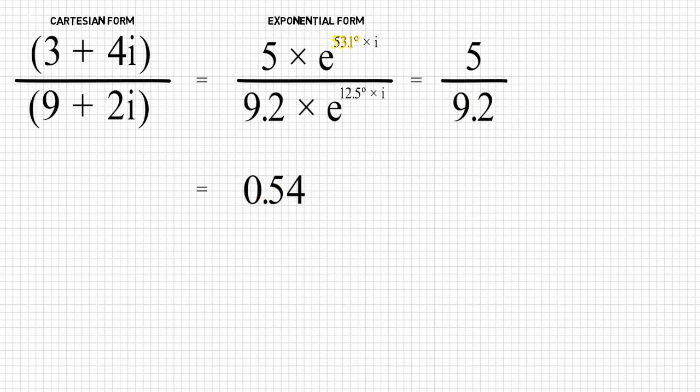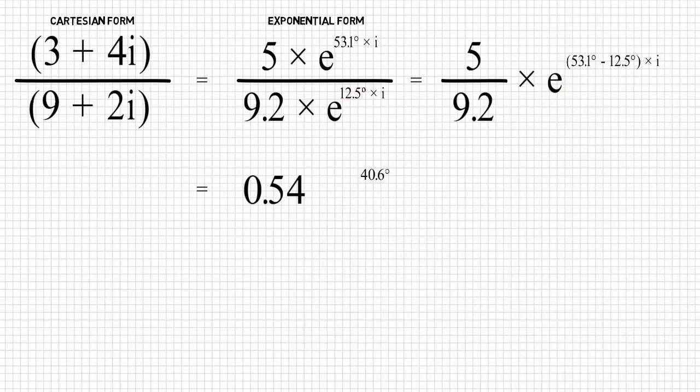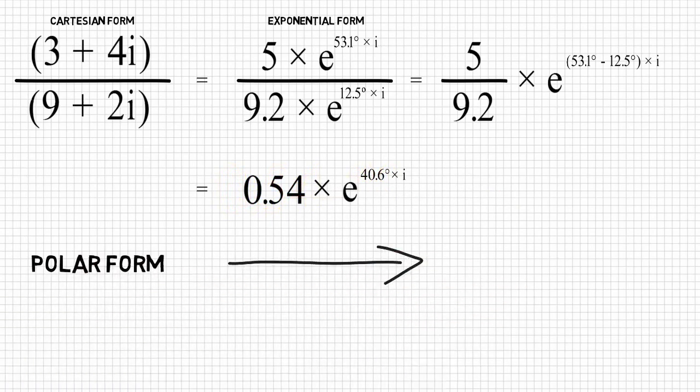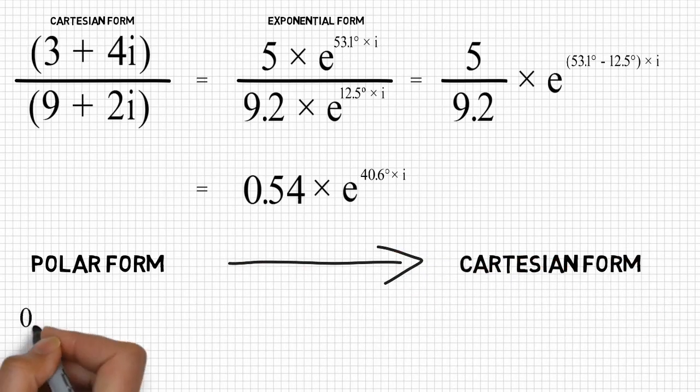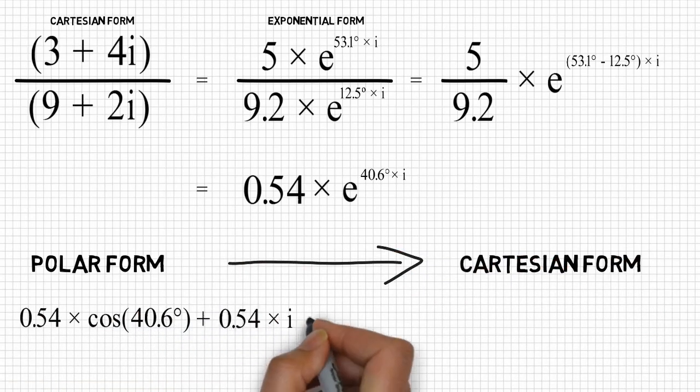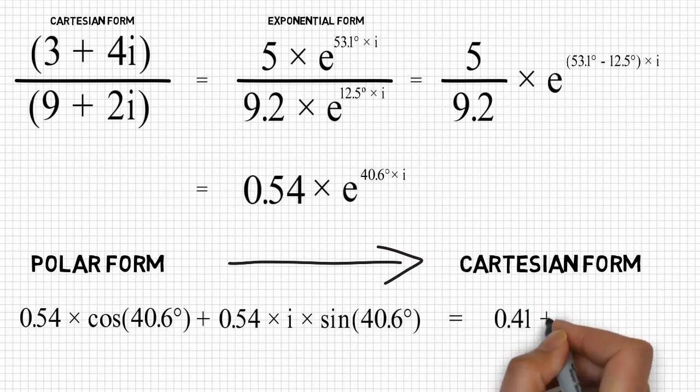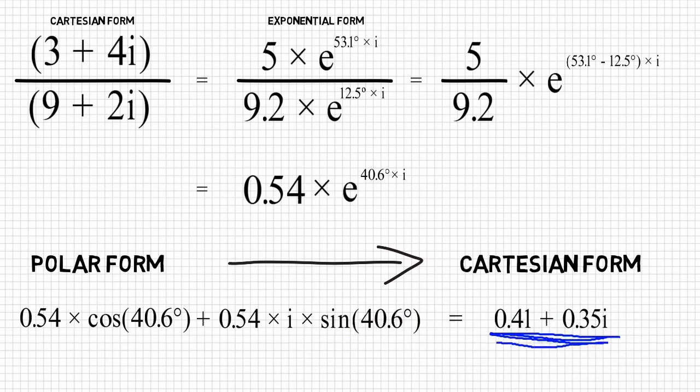When multiplying, we added the 53.1 degrees and the 12.5 degrees. Now that we are dividing, we simply minus them instead, giving us 40.6 degrees. This gives us the overall result, 0.54 times e to the 40.6 degrees times i. Using the polar form, we can convert this back into the Cartesian form, which gives us 0.54 times the cosine of 40.6 degrees, plus 0.54 times i times the sine of 40.6 degrees. Which gives us the result, 0.41 plus 0.35i. The same result as we got before, but arrived at with much greater ease.